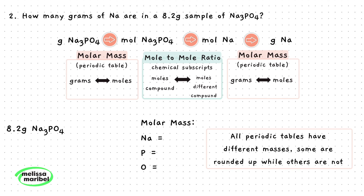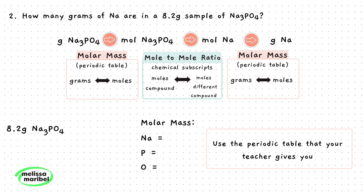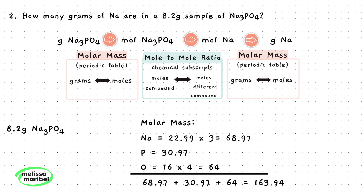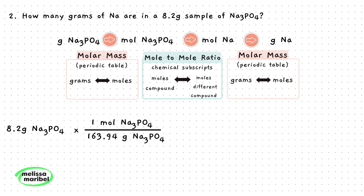Note: all periodic tables have different masses. Some are rounded up while others are not, so use the periodic table that your teacher gives you — if your answer is slightly off, this is why. Sodium's mass is 22.99 and there is a 3 subscript on sodium, so we multiply these together. Next we have 1 phosphorus with its mass. Oxygen has a mass of 16 and there are 4 oxygens, so multiply 16 and 4 together. Add all these numbers together to get the molar mass of the compound. We will use this as our conversion factor, with grams on the bottom to cancel out and 1 mole on top.